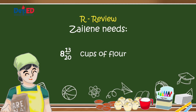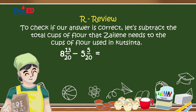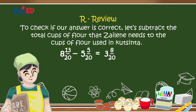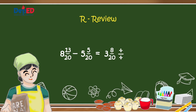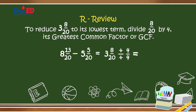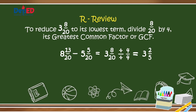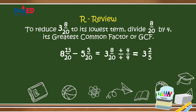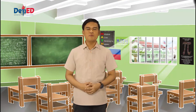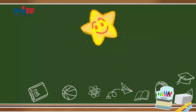Zaylene needs 8 and 13 twentieths cups of flour. To check if our answer is correct, subtract the total cups 8 and 13 twentieths minus 5 and 5 twentieths. We get 3 and 8 twentieths. Reduce 8 twentieths by its GCF 4, and we get 3 and 2 fifths — exactly the number of cups of flour Zaylene needs to make puto. That means our answer is definitely correct. Always remember the 4 basic steps in solving word problems — follow your STAR.